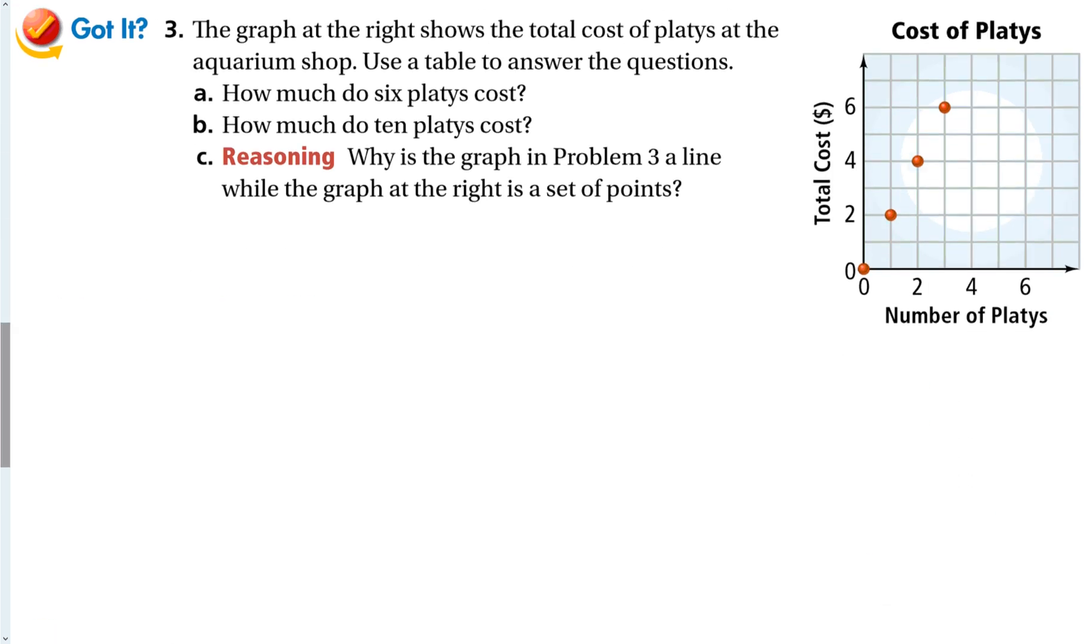So the got it problem here says the graph on the right shows the total cost of platys at the aquarium shop. Use the table to answer the question. So if you buy zero of them, you don't spend any money. It's $0. Makes sense. You buy one is $2. Two is $4. Three is $6. I think we can clearly see here, and it's a little bit easier with a money problem like that, that each one costs $2. So how much do six cost? $12. How much do 10 cost? $20.